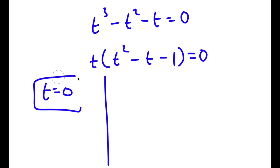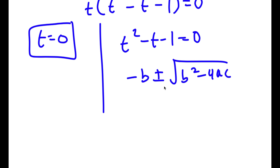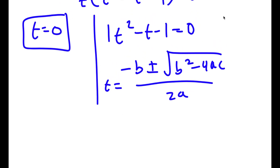Factoring out t gives t times (t squared minus t minus 1) equals 0. This gives me two equations: t equals 0, and t squared minus t minus 1 equals 0. To solve t squared minus t minus 1 equals 0, I plug it into the quadratic formula: negative b plus or minus the square root of b squared minus 4ac, all over 2a.